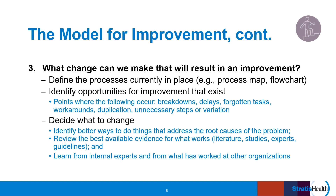Instructions for how to create a process map are provided in the process mapping module. Once the team identifies and analyzes opportunities for improvements, they then decide what to change in the process and what system changes are needed. The key is to make changes that clearly address why problems or breakdowns are occurring. Putting fixes in place that don't address reasons for current breakdowns will not result in sustained improvement. Review the best available evidence for what works, work with internal subject matter experts, and learn what has worked at other organizations. Key changes are then tested using PDSA cycles.